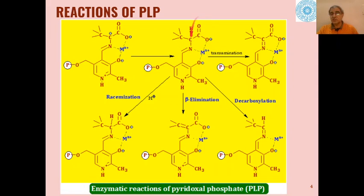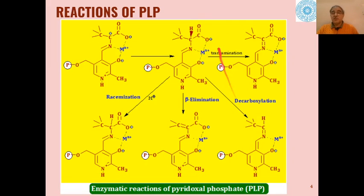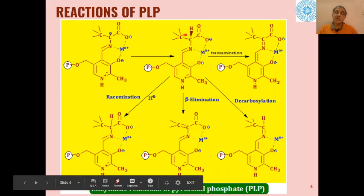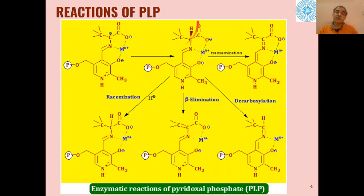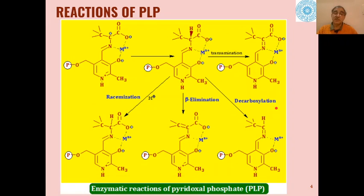In decarboxylation, the carboxyl group is removed and we get the corresponding product. In beta-elimination reactions, the alpha position and beta position are involved — hydrogen from the beta position is eliminated and we get beta-elimination products. In racemization, an alpha-beta hydrogen transfer takes place and we get the racemized product. This is how PLP acts in different types of racemization, beta-elimination, and decarboxylation reactions.